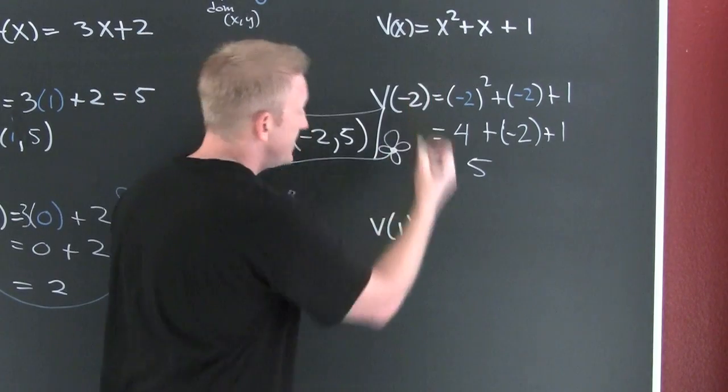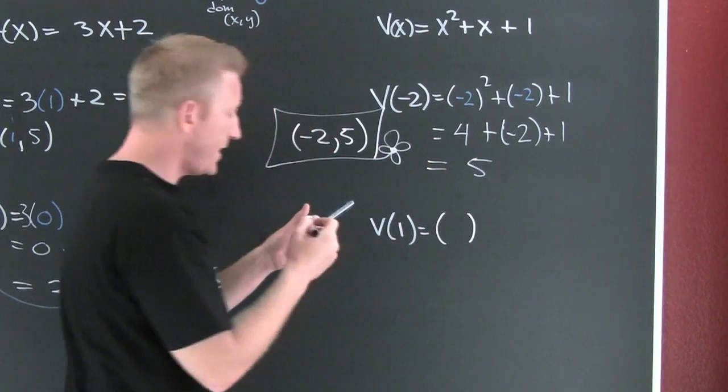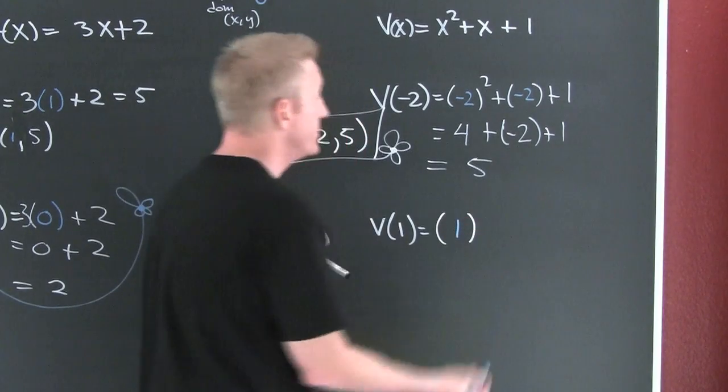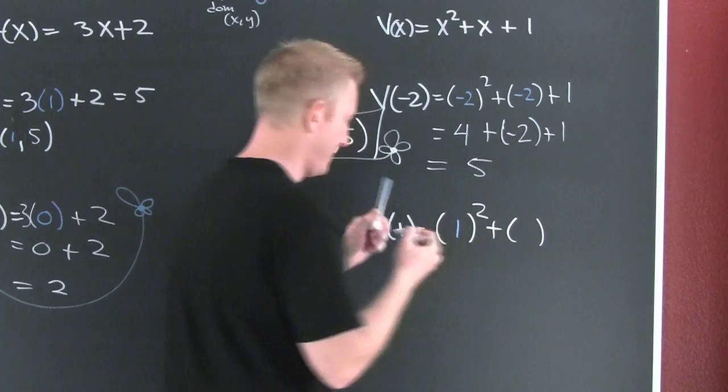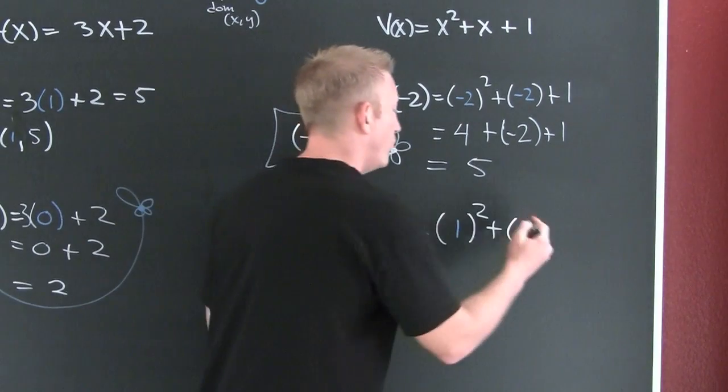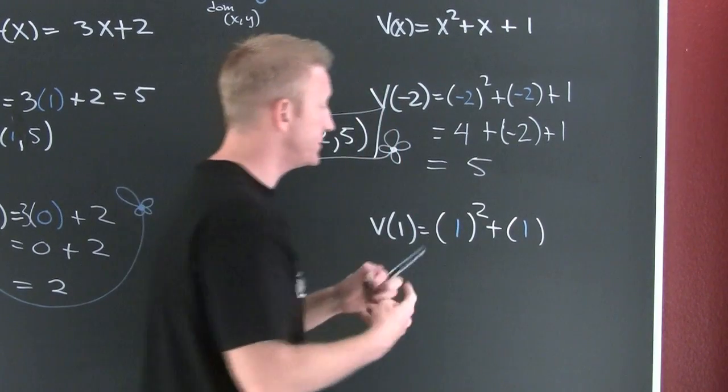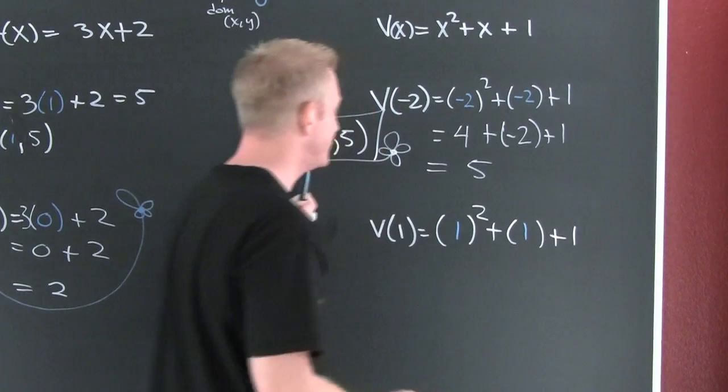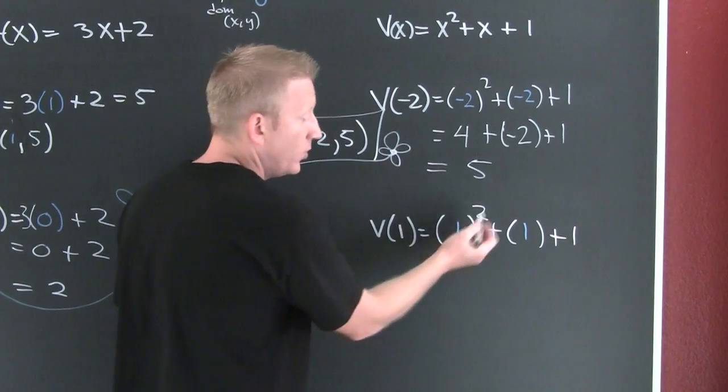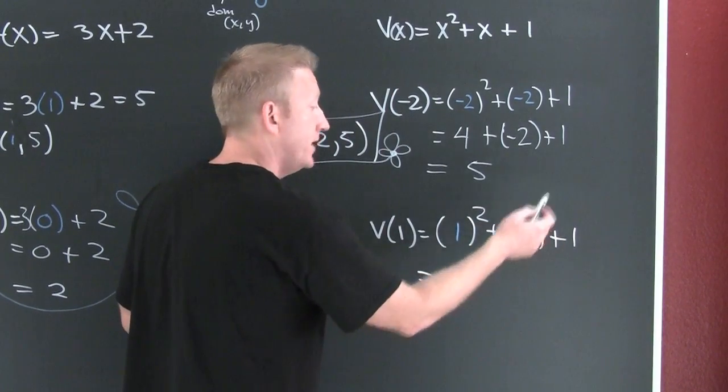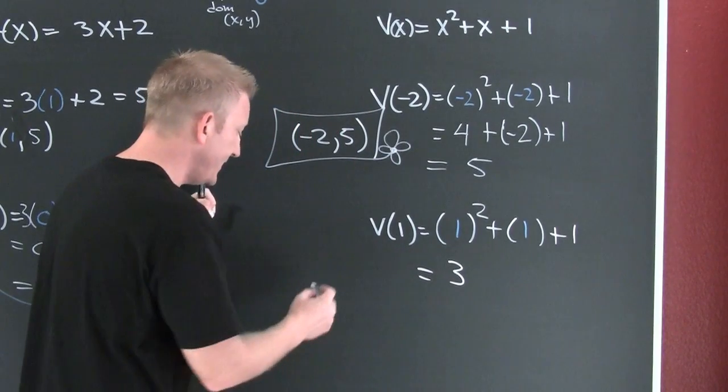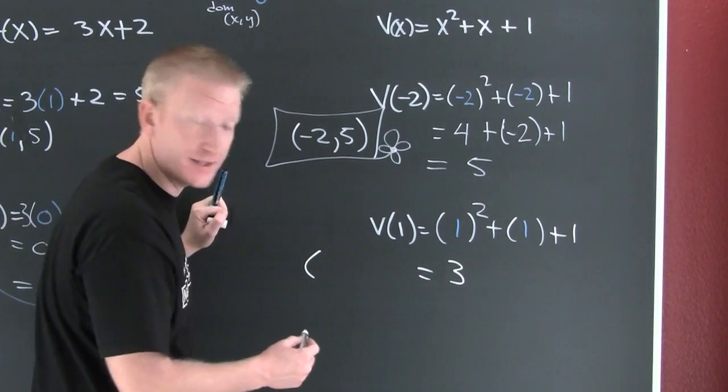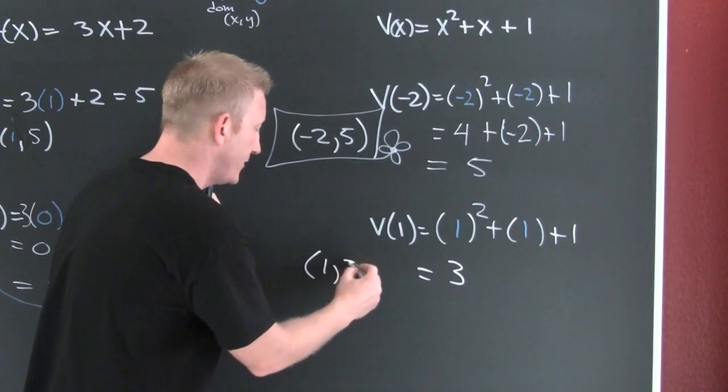Down here, I have an input value of 1, so I'm gonna have 1^2 + 1 + 1. 1 squared is 1, 1 and 1 and 1 is 3. So here we see our point's gonna be (1,3).